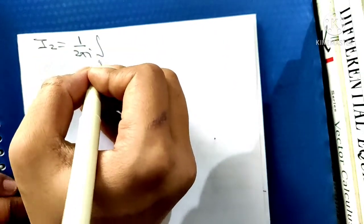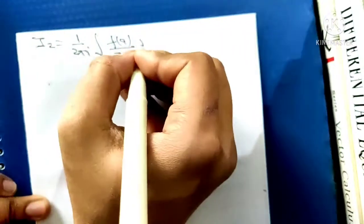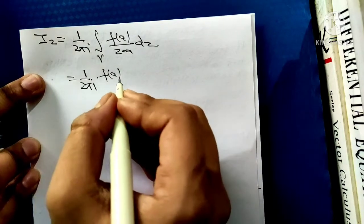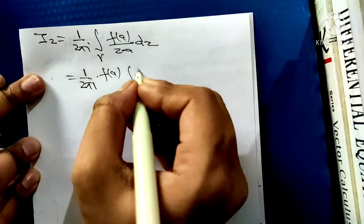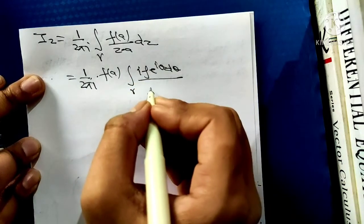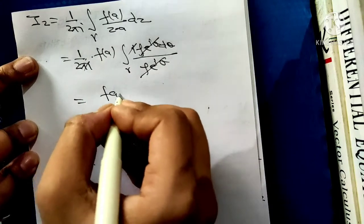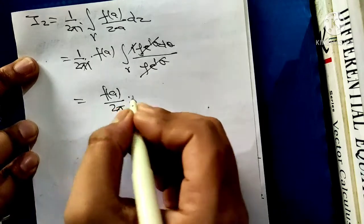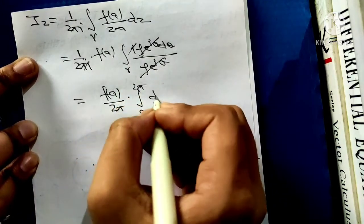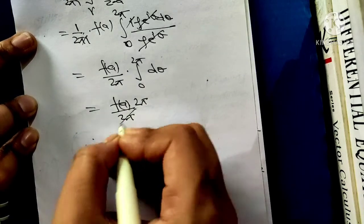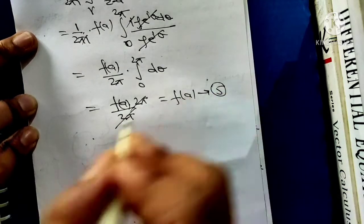Now we solve for integral I2. I2 equals 1 upon 2πi times the integral over gamma of f(a) upon z minus a dz. Taking f(a) outside the integral and substituting dz equals iρe^(iθ) dθ and z minus a equals ρe^(iθ), the ρe^(iθ) terms cancel, giving 1 upon 2πi times f(a) times the integral from 0 to 2π of i dθ. This equals f(a) upon 2π times 2π, which equals f(a) — call this equation 5.